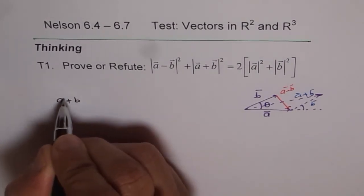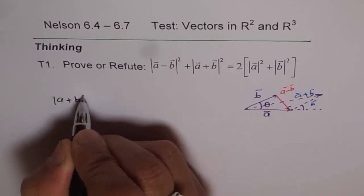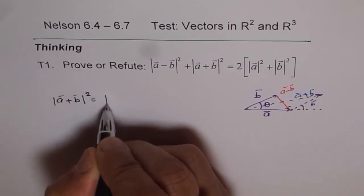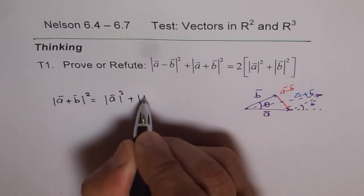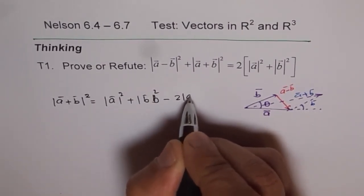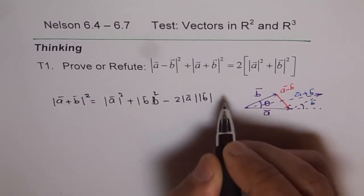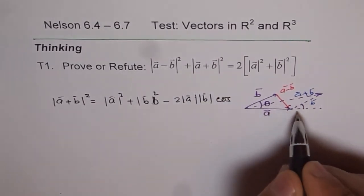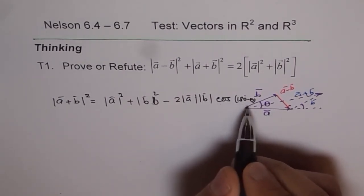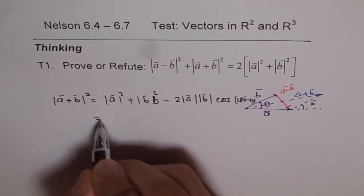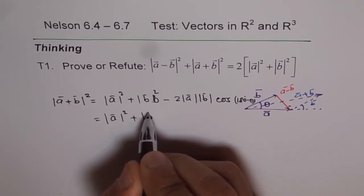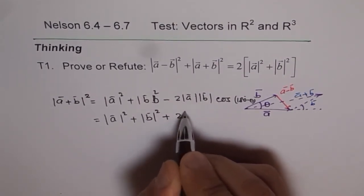|A⃗ + B⃗|² equals |A⃗|² + |B⃗|² minus 2|A⃗||B⃗|cos(180° - θ). Now when you do cos(180° - θ), it actually becomes plus, so what you get is |A⃗|² + |B⃗|² + 2|A⃗||B⃗|cos θ.